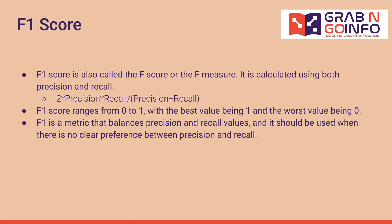F1 score is calculated using both precision and recall. It is also called the F-score or the F-measure. The F1 score value is 2 times the multiplication of precision and recall divided by the sum of precision and recall. The F1 score ranges from 0 to 1, with the best value being 1 and the worst being 0. F1 is a metric that balances precision and recall values, and it should be used when there is no clear preference between precision and recall.